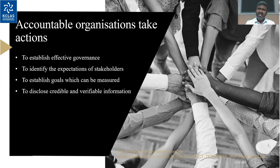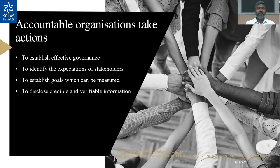Accountable organizations take actions differently. Organizations associated with AA 1000 always love to establish effective governance. Every organization has management or administrative principles, but here they talk about effective and good governance. The next action is to identify the expectations of stakeholders. Many corporates do not give a lot of importance to stakeholders — they just satisfy their customers or suppliers. But this certification helps you identify the expectations of stakeholders: what is their expectation and how can you engage them.